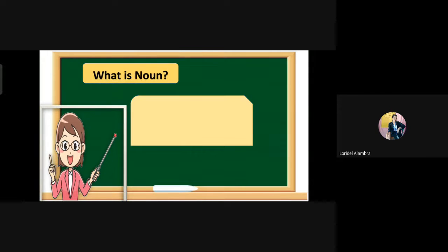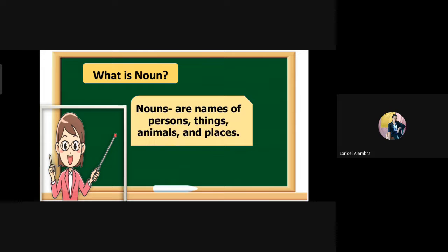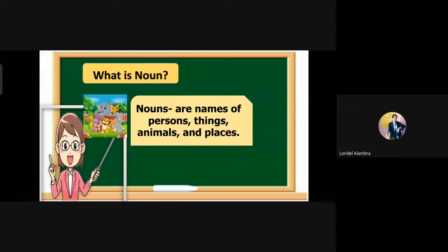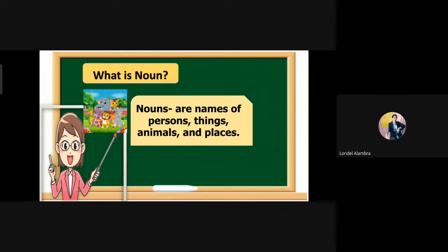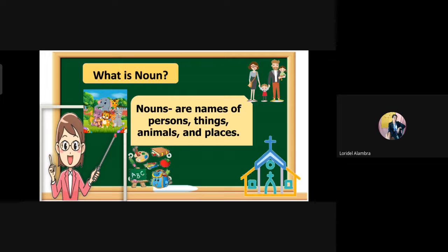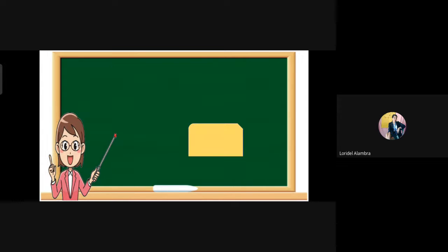What is a noun? Very good. Nouns are names of persons, things, animals, and places. There are two types of nouns — the common noun and the proper noun.